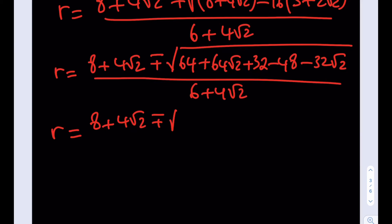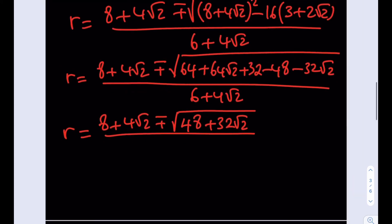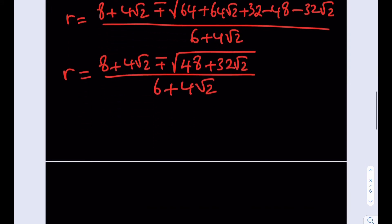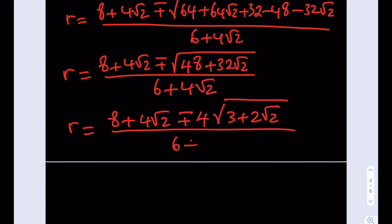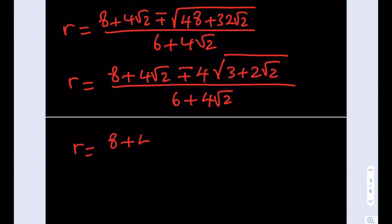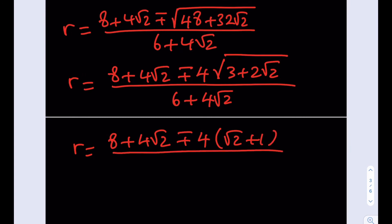Simplifying: 64 − 48 = 16 and 64√2 − 32√2 = 32√2, so the discriminant is 48 + 32√2. The largest perfect square factor of both 48 and 32 is 16, so √(48+32√2) = 4·√(3+2√2). Since 3+2√2 = (√2+1)², we get 4·(√2+1). So r = [ (8+4√2) ± 4(√2+1) ] / (6+4√2).